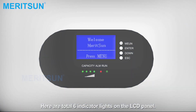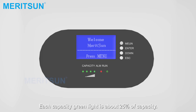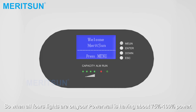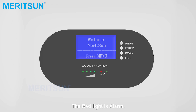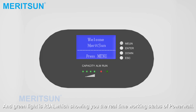There are a total of 6 indicator lines on the LCD panel. Each green capacity line represents about 25% of capacity, so when all 4 lines are on, your Powerwall is at about 75% to 100% power. The red line indicates alarm, and the green line indicates run, showing you the real-time working status of the Powerwall.